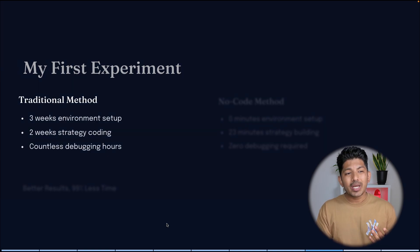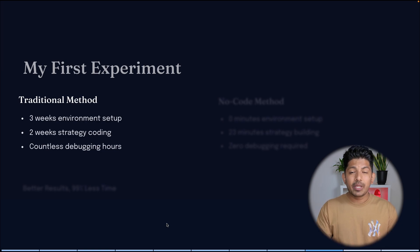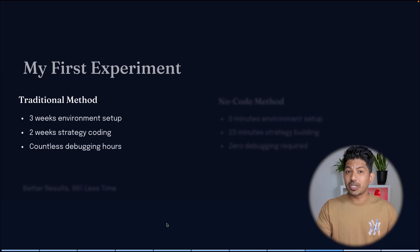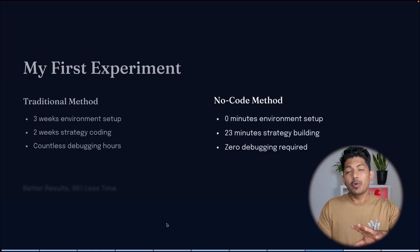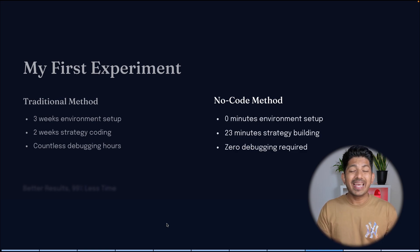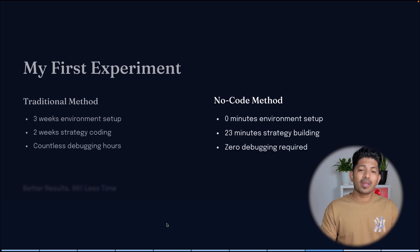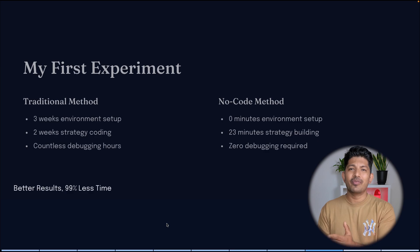Let me tell you about my first experiment. In the traditional method, I had to give at least three weeks to set up environments, then two to three weeks for strategy writing, and then countless hours in debugging. But now with no-code methods, you can start right away — with one click your system is completely configured. It took me around half an hour to build the strategy using AI like Claude 4, which recently launched Sonnet 4 and Opus 4 — it's absolutely mind-blowing. Debugging is very reduced, not zero, but very much less. Better results with much less time.